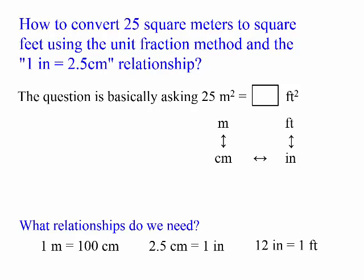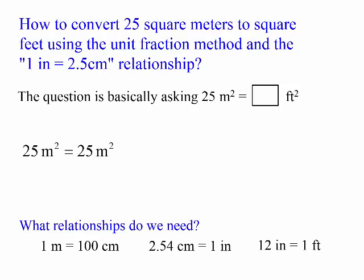25 meters square equals 25 meters square. The unit fractions method is essentially saying that I'm multiplying one over one.